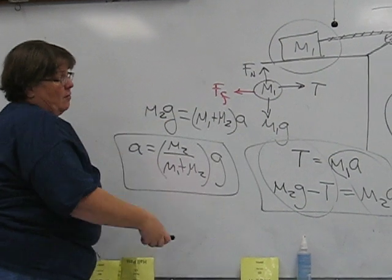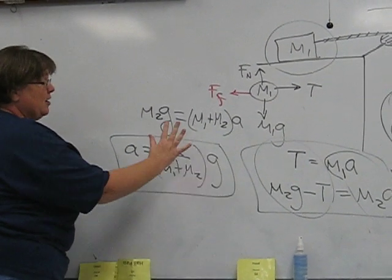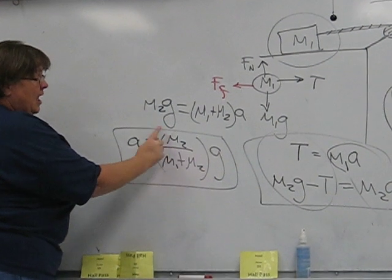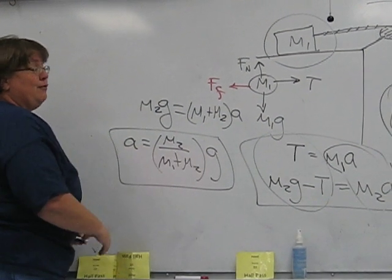If M1 were extremely small and M2 were big, the system would basically accelerate at a rate of G. It's almost like cutting, you could even cut the string, of course. Then there'd be no M1, and A would equal G for M2.